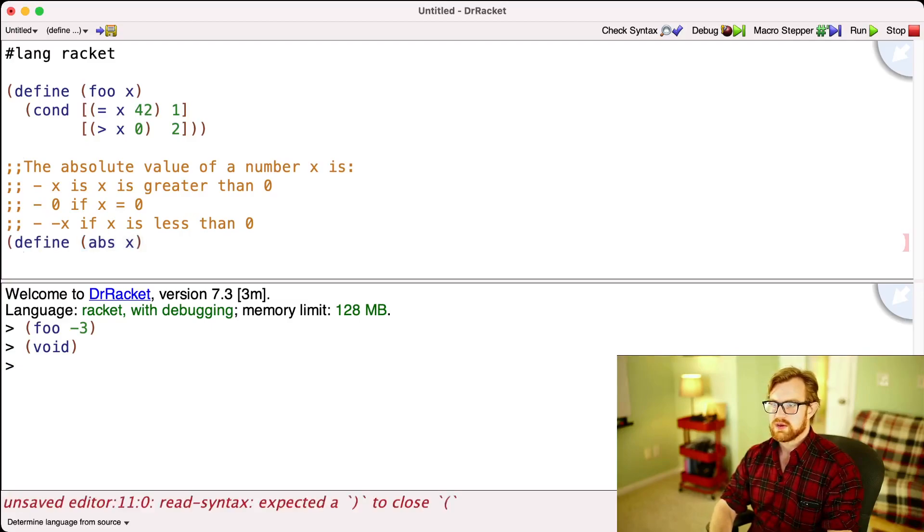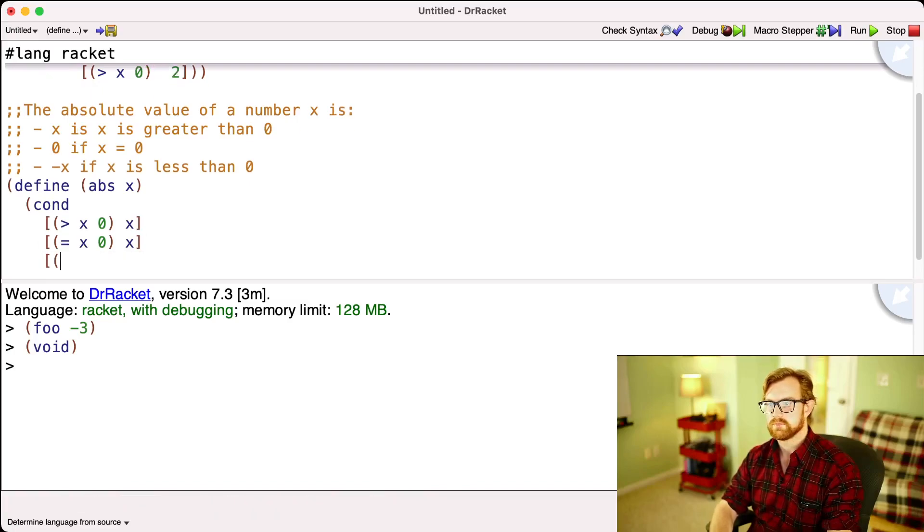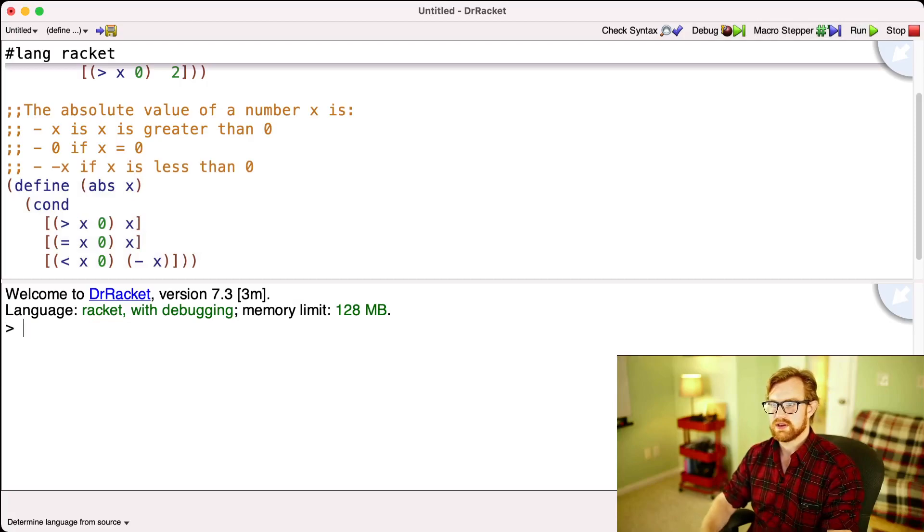It's the absolute value function. We're going to say the absolute value of x is going to be, and then we're going to say cond. When x is greater than 0, it's just going to be x. When x is equal to 0, it's going to be 0. What about when x is less than 0? Well then it's going to be negative x. Alright, let's run this code. Abs of negative 2. Abs of 2. Abs of 0. Alright, so it looks like it works.